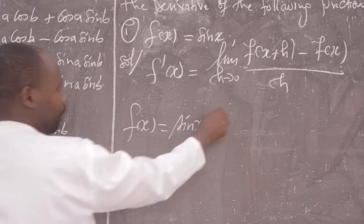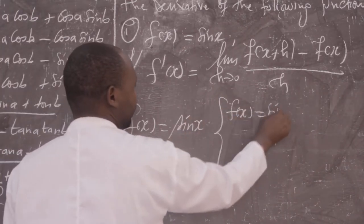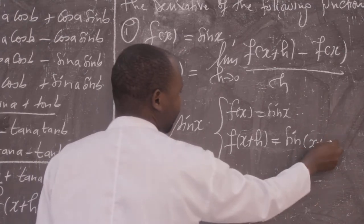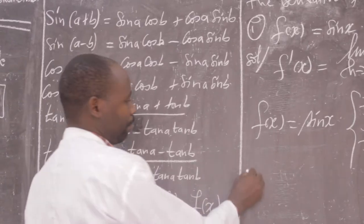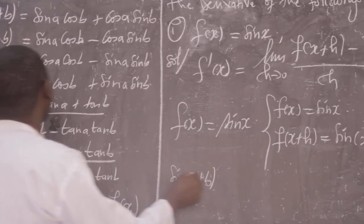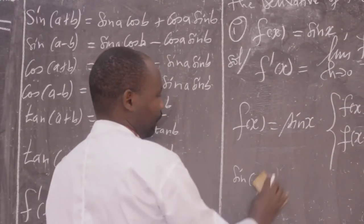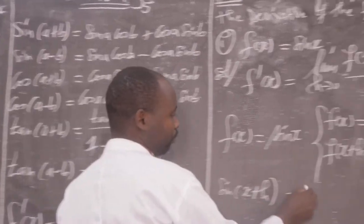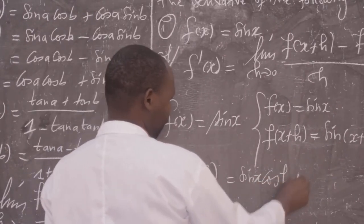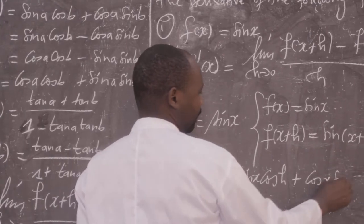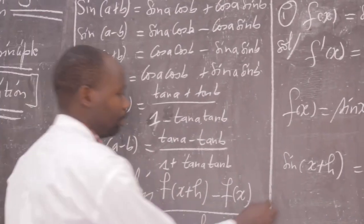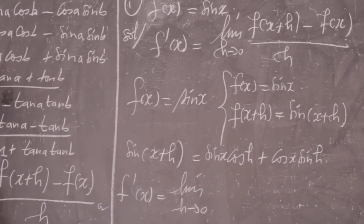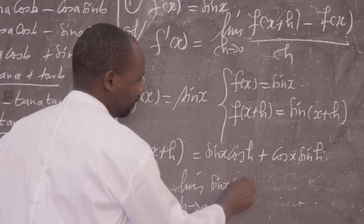Our function f(x) = sin(x). This means f(x+h) = sin(x+h). Now, by using sin(x+h), we can expand this using the sum formula: sin(x+h) = sin(x)cos(h) + cos(x)sin(h).